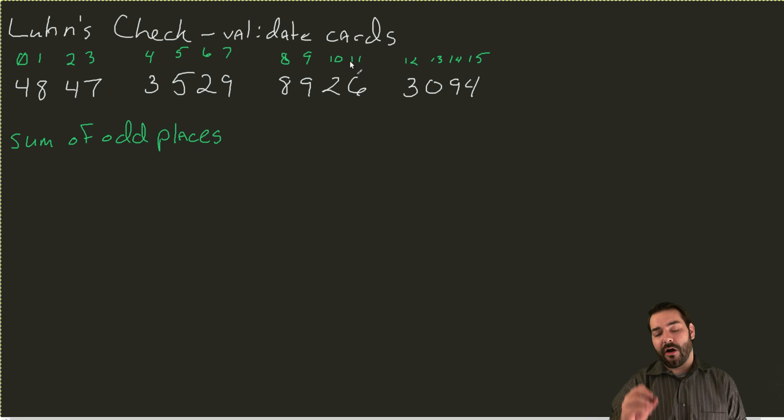So what we can do with this is something first known as the sum of odd places. I just counted out a bunch of numbers. Everywhere I have an odd number, I'm going to add that. Now, one of the things I do have to point out is I'm going to go right to left. I know that may not seem like a big deal when we're dealing with Visa. However, if we're looking at different cards like MasterCard or American Express or Discover, this actually matters.